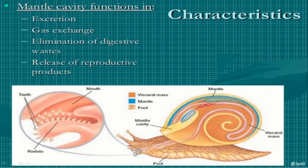The feeding organ - radula - is the mouth structure of mollusca. Inside the mouth, teeth-like structures are present on the surface of the radula. They help in shaving and cutting the food.